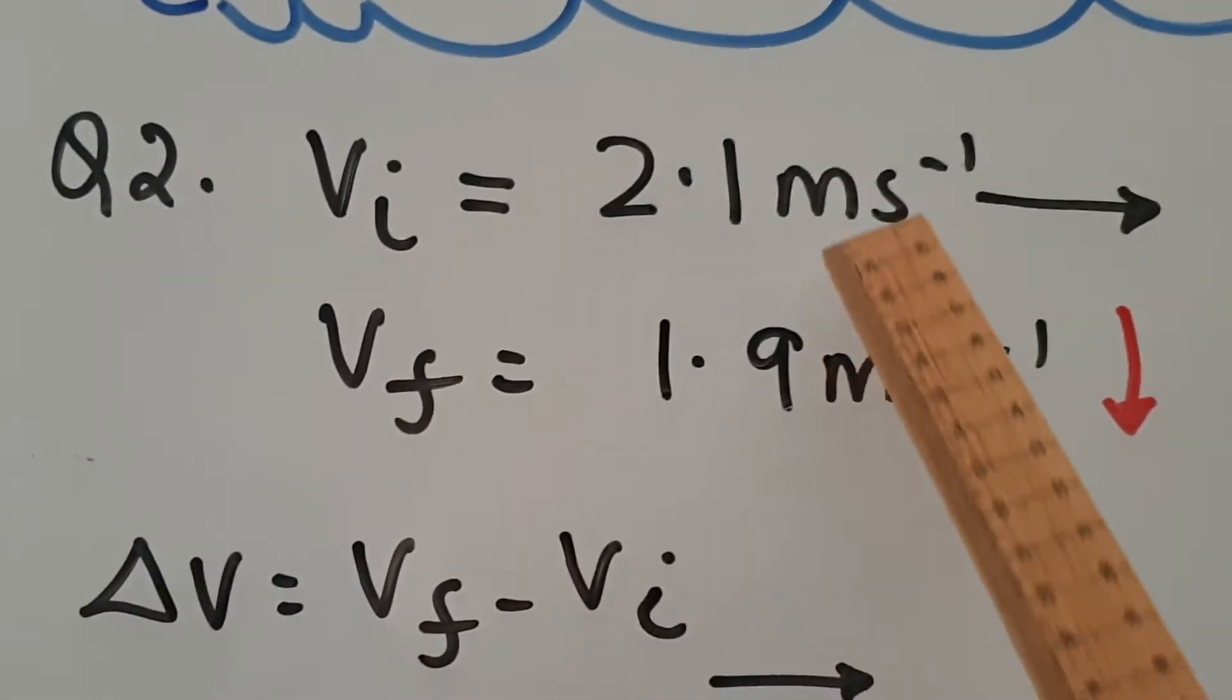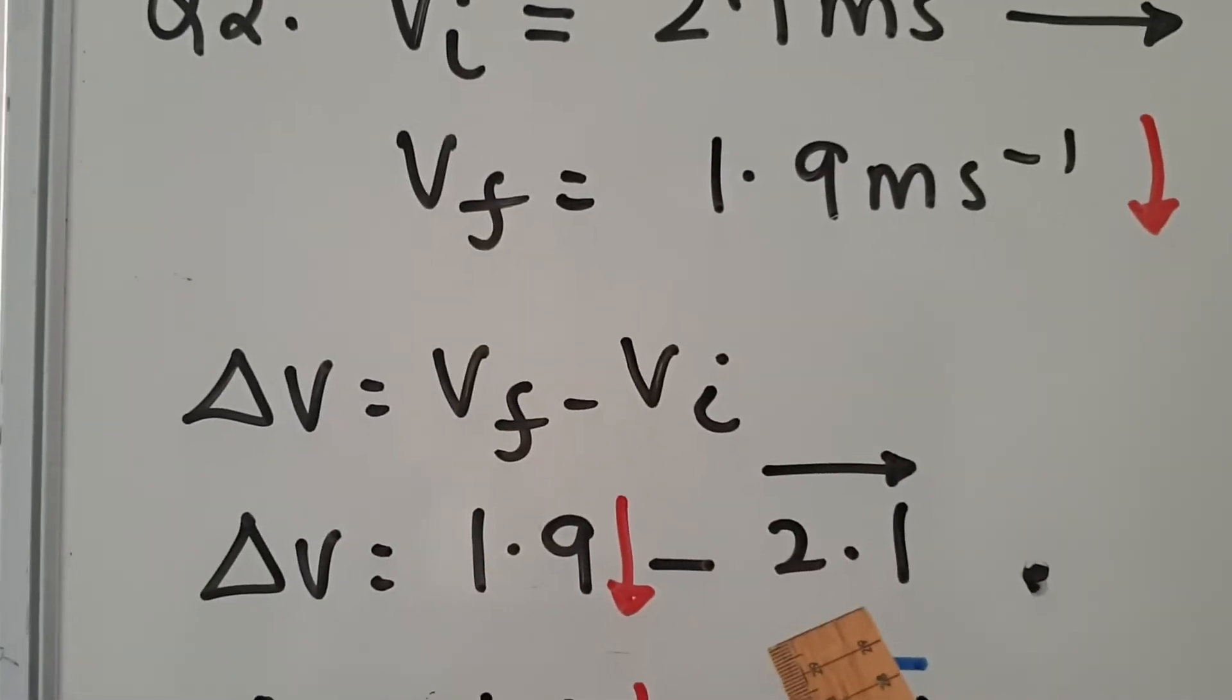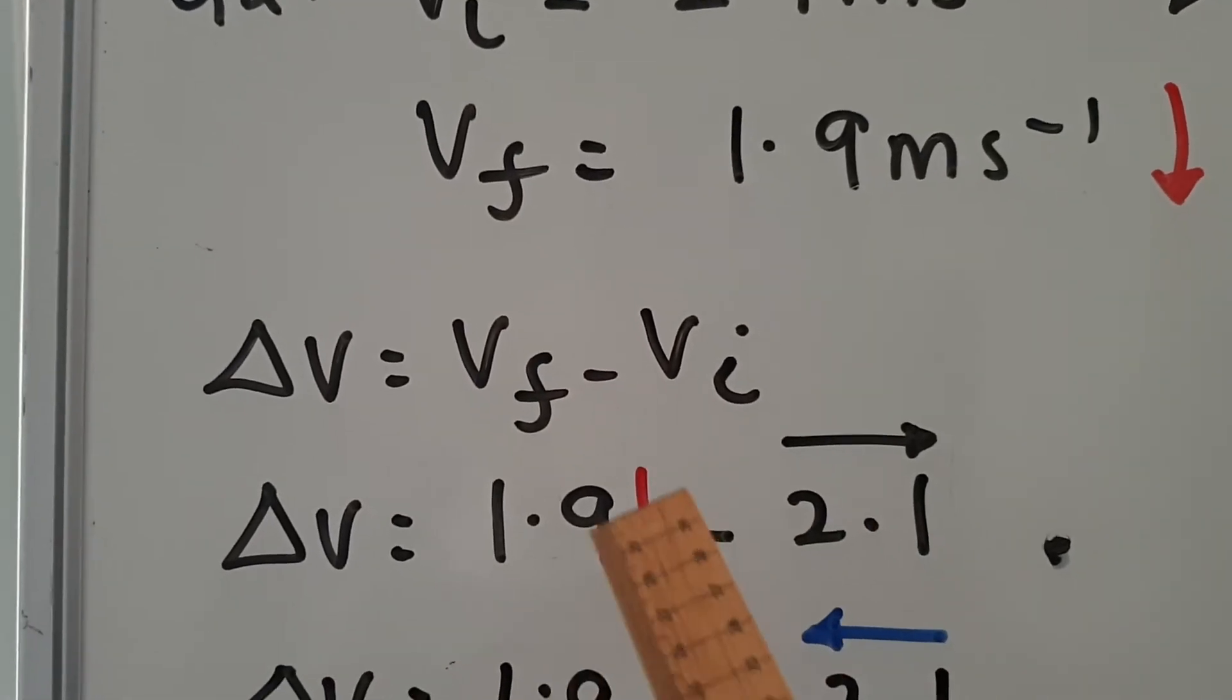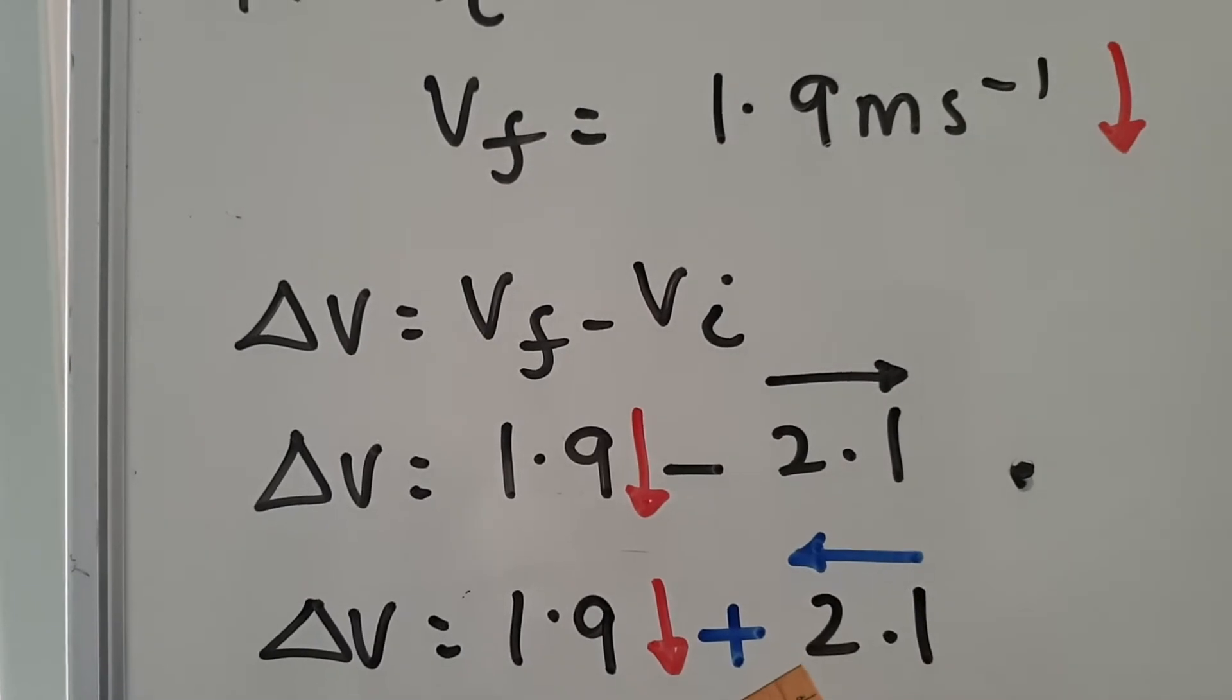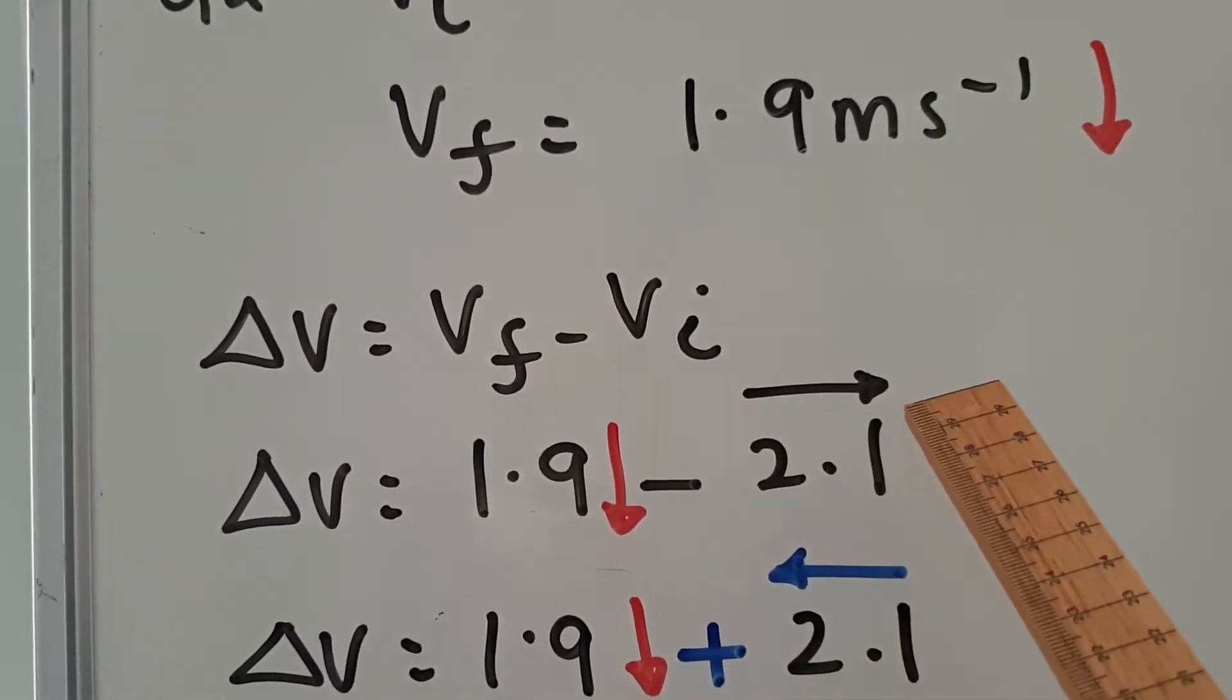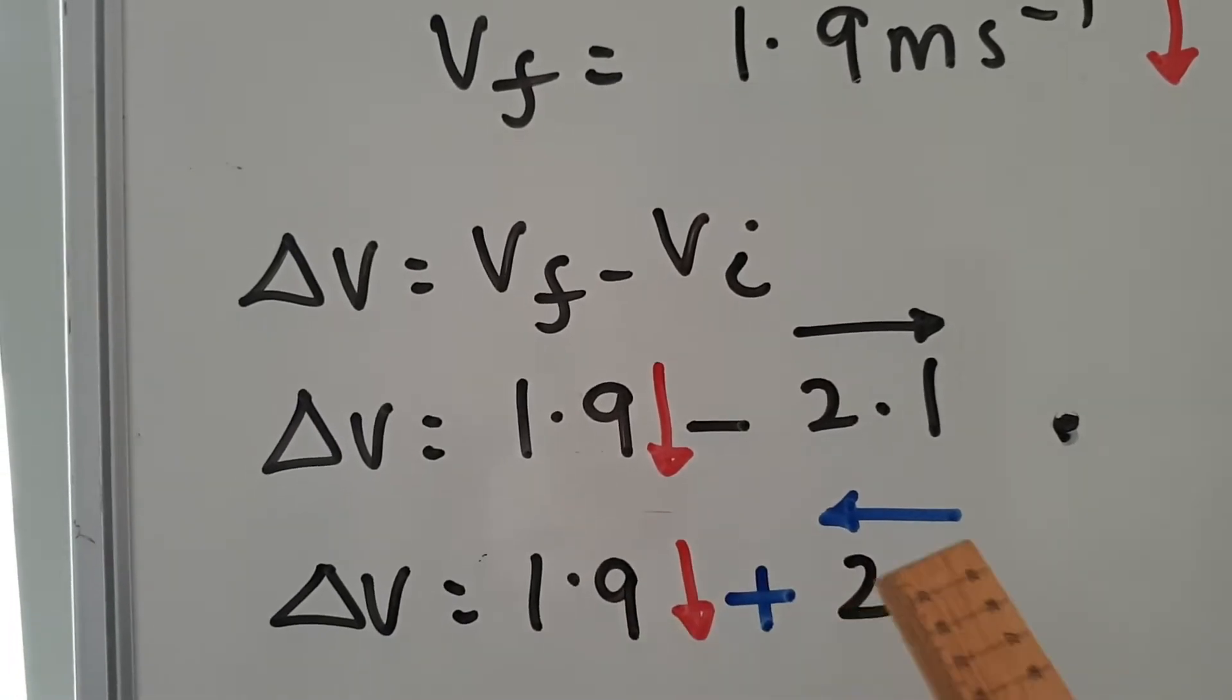VI, that's minus initial, that's your 2.1 pointing to the right. So then we use the rules. The first number stays as it is, but the second number, the minus becomes a plus and the arrow pointing to the right now will point to the left. And then we just add them vectorially.